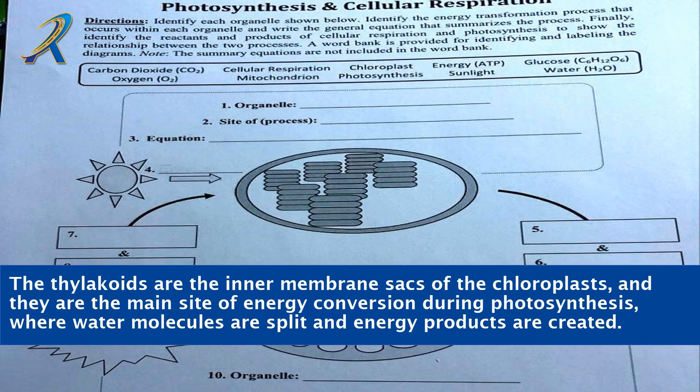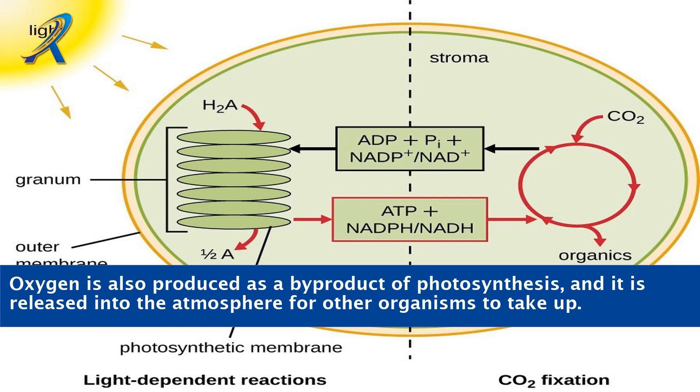The thylakoids are the inner membrane sacs of the chloroplasts, and they are the main site of energy conversion during photosynthesis, where water molecules are split and energy products are created. Oxygen is also produced as a byproduct of photosynthesis, and it is released into the atmosphere for other organisms to take up.